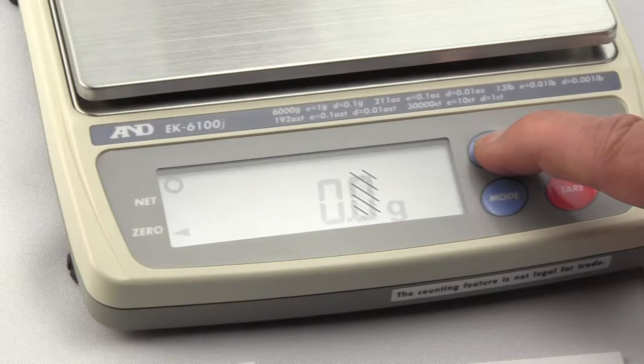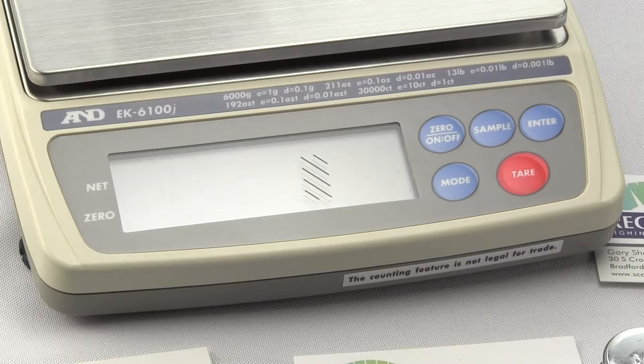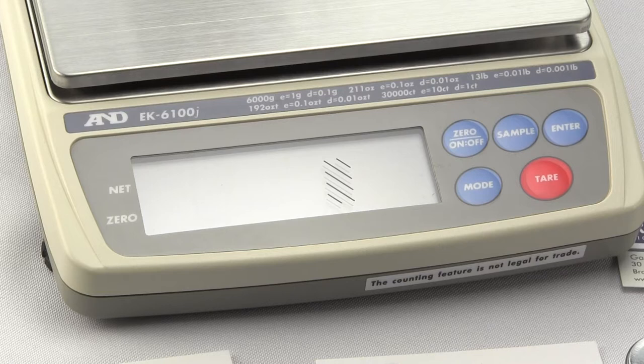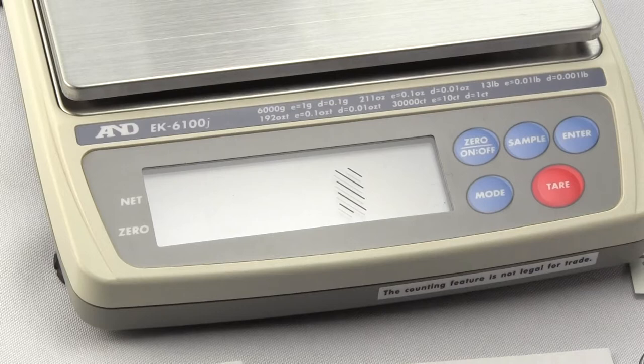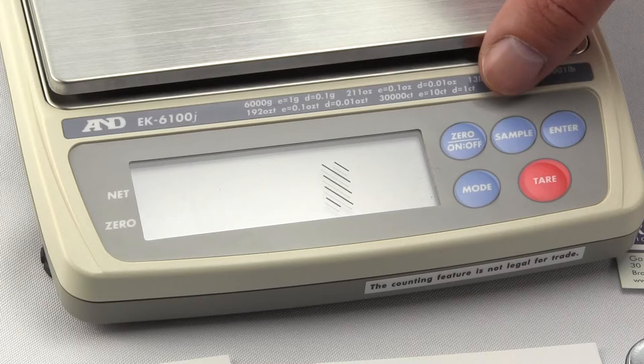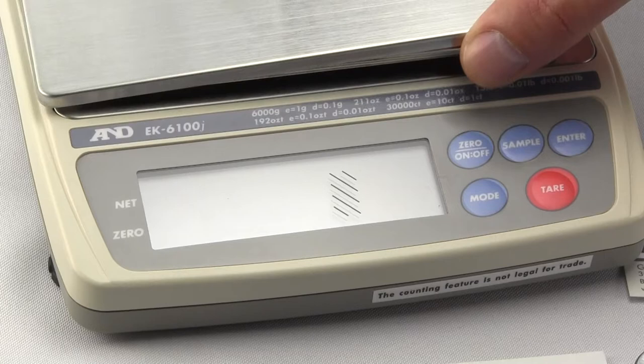So I'm going to shut off the scale so you can actually see. So those lines stay right on the scale. This is because again D is the minimum division that the scale can display and E is the verified scale division or value of the verification scale division for legal for trade. You'll also notice here the weighing platform. You have a nice large removable weighing platform. It measures 5.2 inches by 6.7 inches.